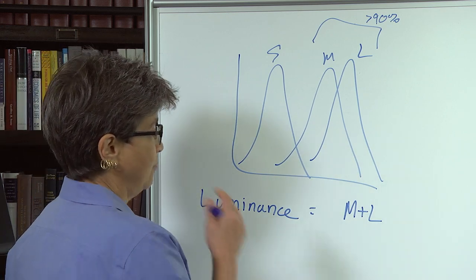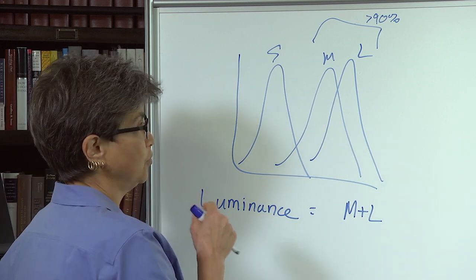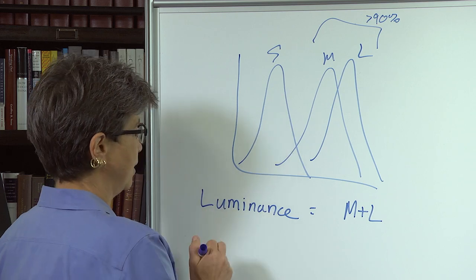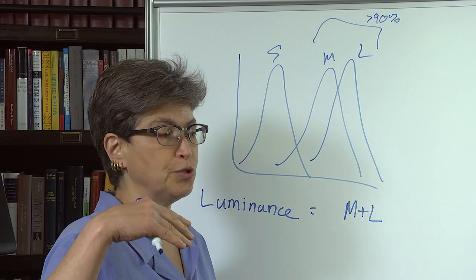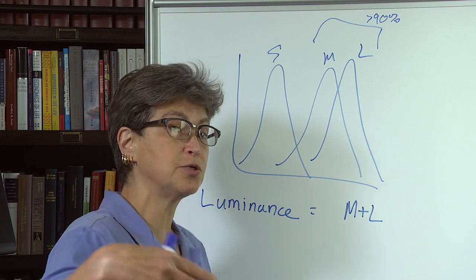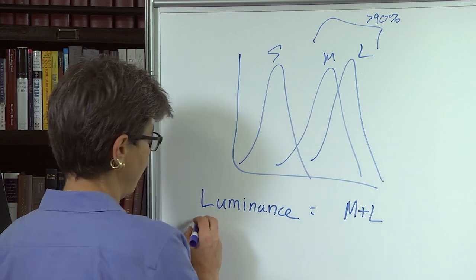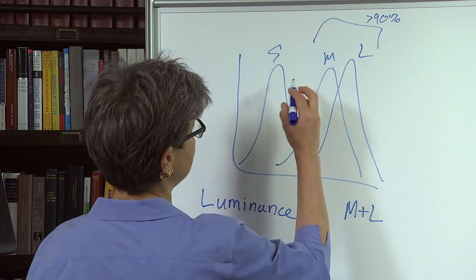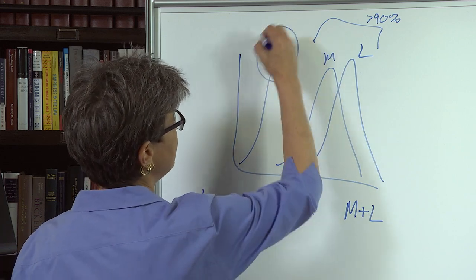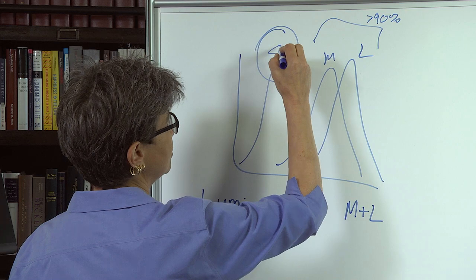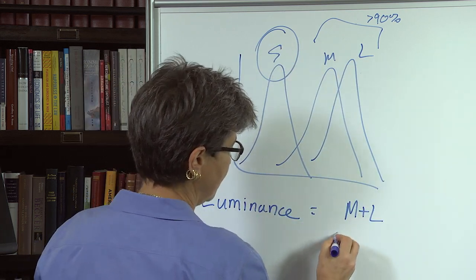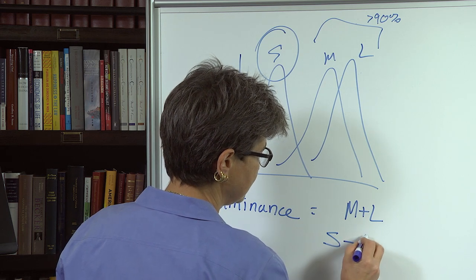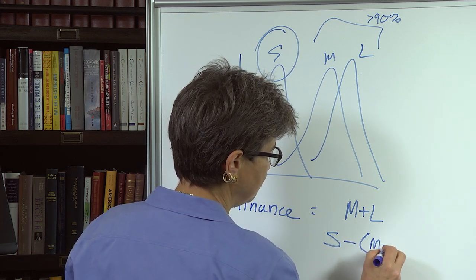We also have two other channels in the retina. And these are channels that are going to enable us to both see form, but also see color. And so one of the channels is what's the relative activity here in this short wavelength versus all this longer wavelength. And so we have S minus M plus L.